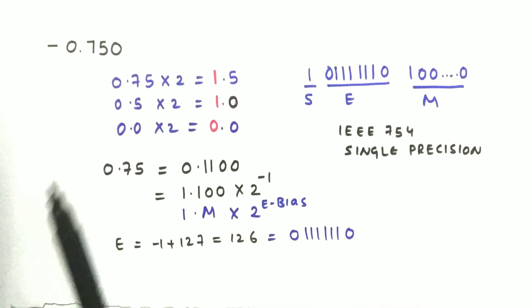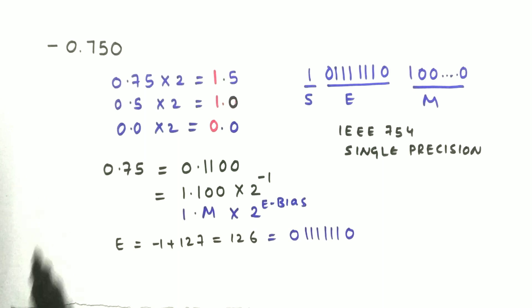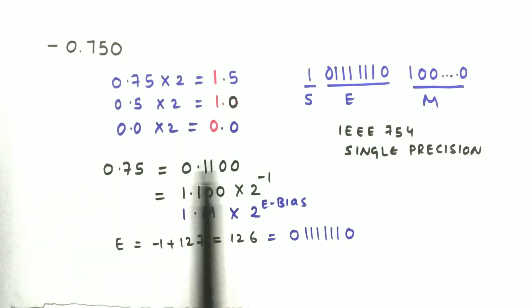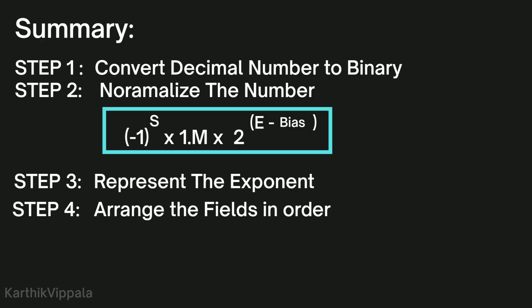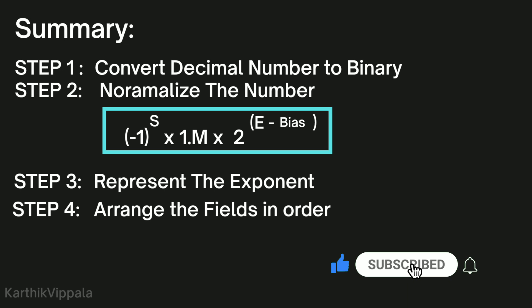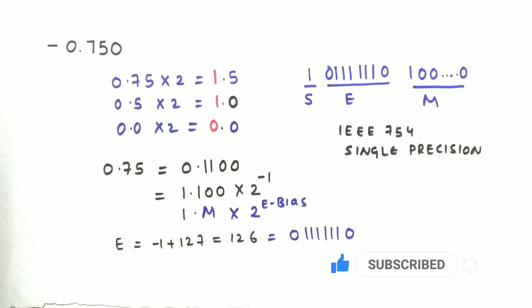This is how we convert a real number to IEEE 754 single precision standard using four steps. To summarize: step one is to convert to binary, step two is to normalize, step three is to represent the exponent, and step four is to arrange them in the fields.